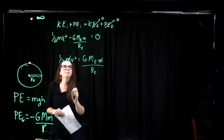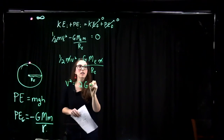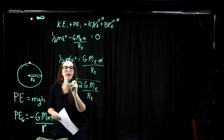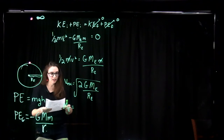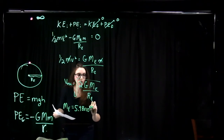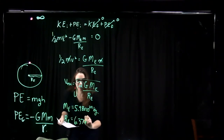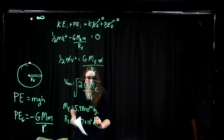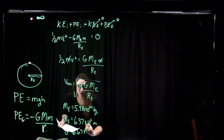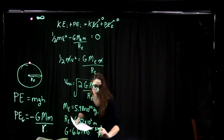These masses cancel. So our escape speed v squared is equal to 2G times the mass of the Earth divided by the radius of the Earth. Taking the square root gives the escape velocity. The mass of the Earth is 5.98 × 10²⁴ kg, the radius of the Earth is 6.37 × 10⁶ m, and the gravitational constant is 6.67 × 10⁻¹¹ N·m²/kg².